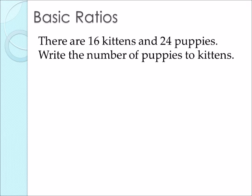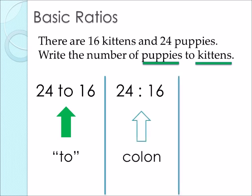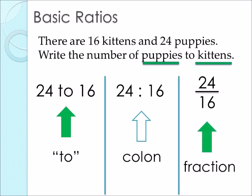The first topic we will be talking about is basic ratios. Here's the first problem: there are 16 kittens and 24 puppies. Write the number of puppies to kittens. In ratios, it's very important to focus on the order in which the problem is asking. Here, it's asking puppies to kittens. Therefore, we can write it in one of three ways: 24 to 16 using the word 'to', we can write 24 colon 16, or we can write it as a fraction, 24 over 16.